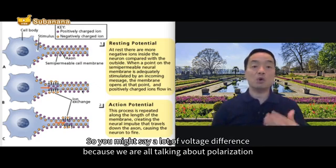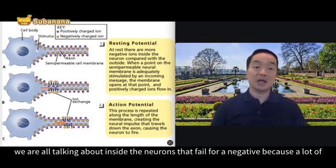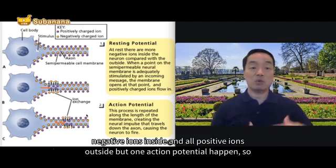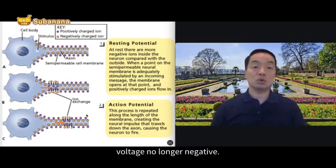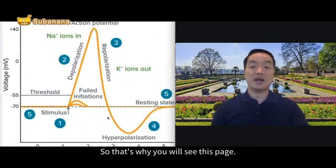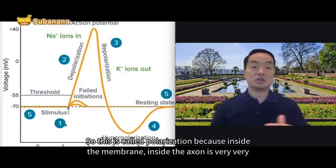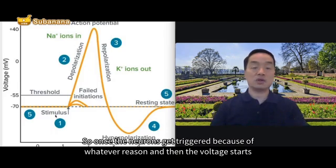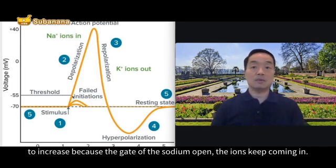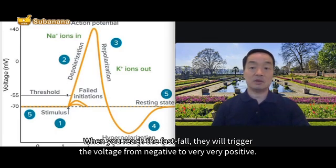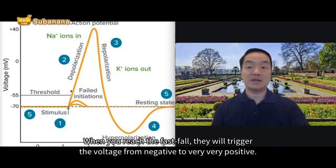You might notice there are a lot of voltage differences. We are talking about polarization — inside the neuron being negative because of many negative ions inside and all positive ions outside. At point one, without anything happening, this is polarization — inside the axon is very negative, at minus 70 millivolts. Once the neurons get triggered for whatever reason, the voltage starts to increase because the sodium gates open and the ions keep coming in. When you reach the threshold, that triggers the voltage from negative to very positive.